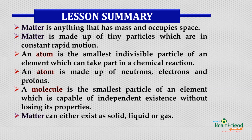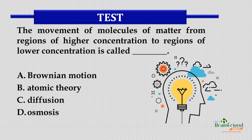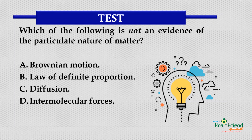It's test time. Question 1: The movement of molecules of matter from regions of higher concentration to regions of lower concentration is called: A. Brownian motion, B. Atomic theory, C. Diffusion, or D. Osmosis. The correct answer is C — Diffusion. Question 2: Which of the following is not an evidence of the particulate nature of matter? A. Brownian motion, B. Law of definite proportion, C. Diffusion, D. Intermolecular forces. The correct answer is option D — Intermolecular forces.